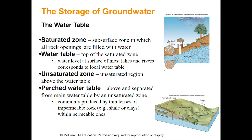Some key terms: the water table is just the surface - that's the water table. Then you have the saturated zone, which is the area filled with water. There's the unsaturated zone, the area where there isn't water. The water table can rise and lower - if you get more rain and infiltration the water table will rise up, and if you have droughts and take water out of the ground the water table can lower.